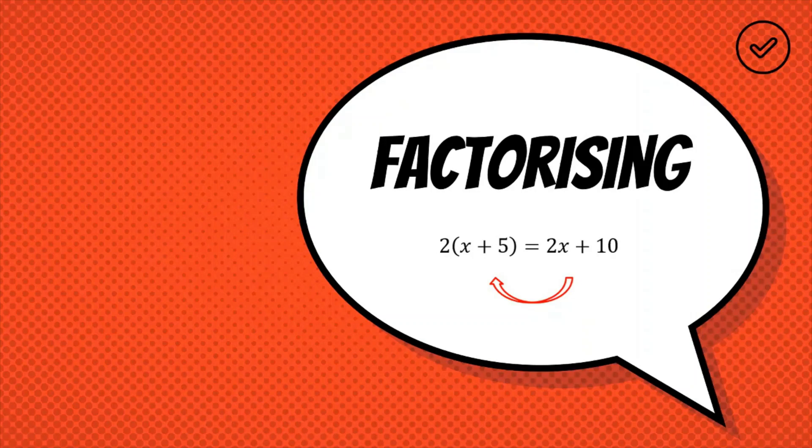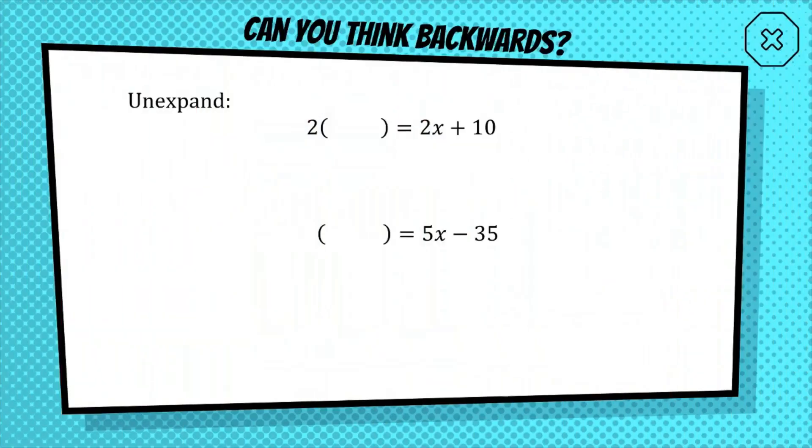Okay, so to introduce factorizing, we're going to start off with a couple of warm-up questions about thinking backwards. So you've just had a lesson on how to expand algebraic expressions. In this one, I want to see if you can force your mind to work backwards. Here is the answer, 2x plus 10, after something has been expanded.